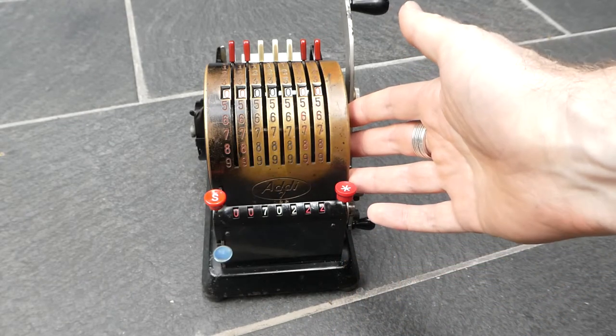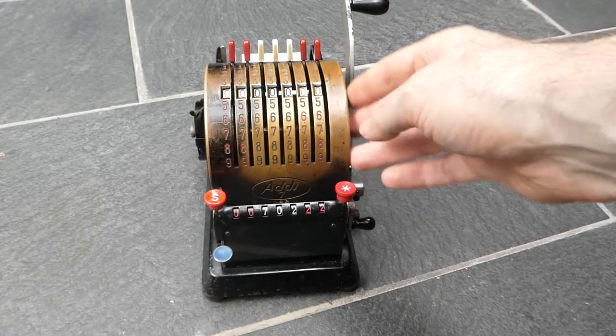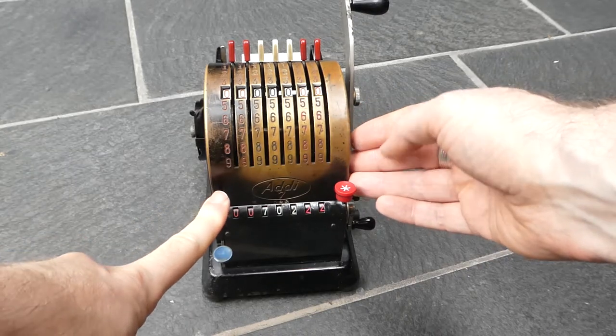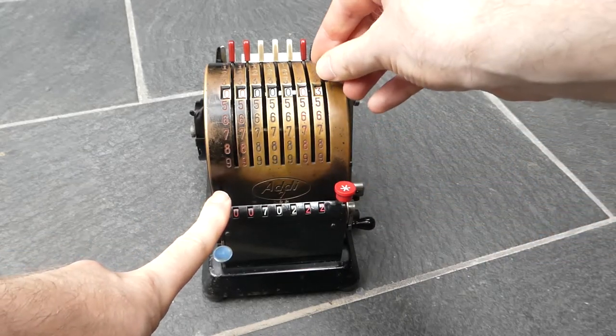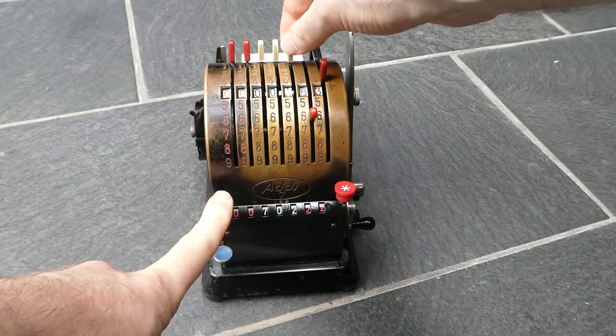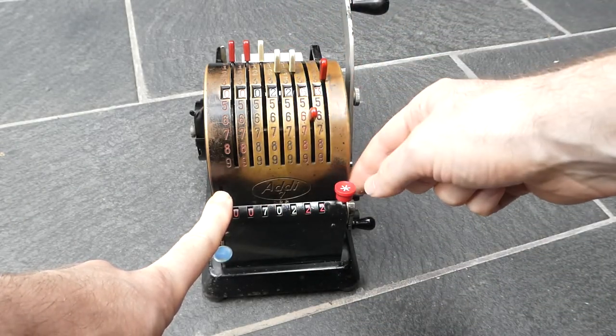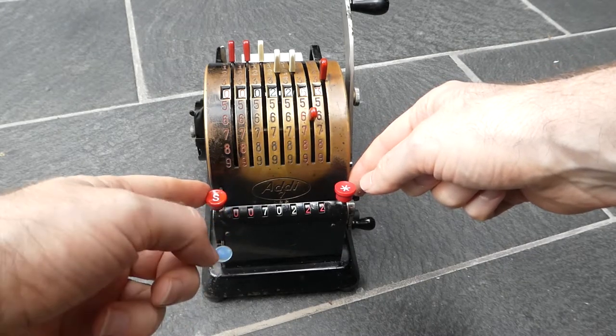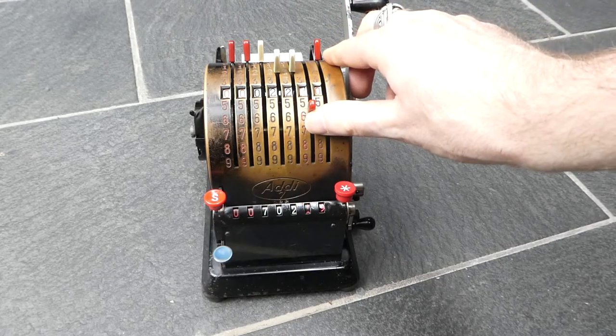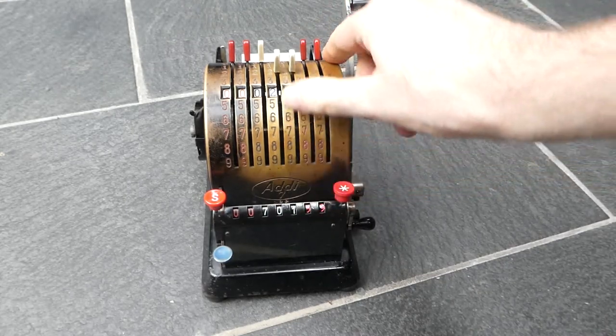You can also subtract. To do that you press the S button and hold that down. You can then enter a number without changing what's on the register. And if you then release the S button and push these input pins back up to zero, then you do the actual subtraction.